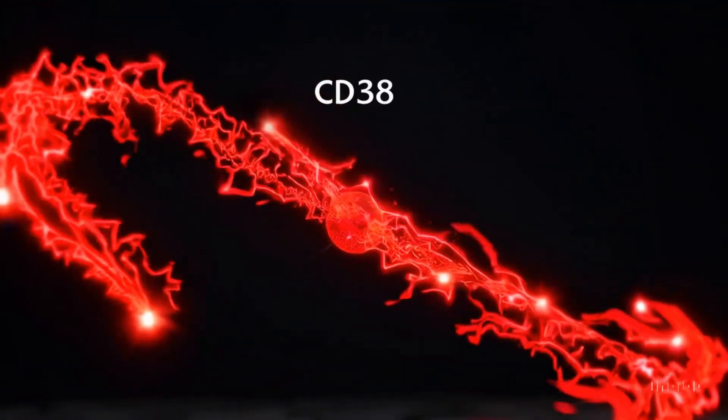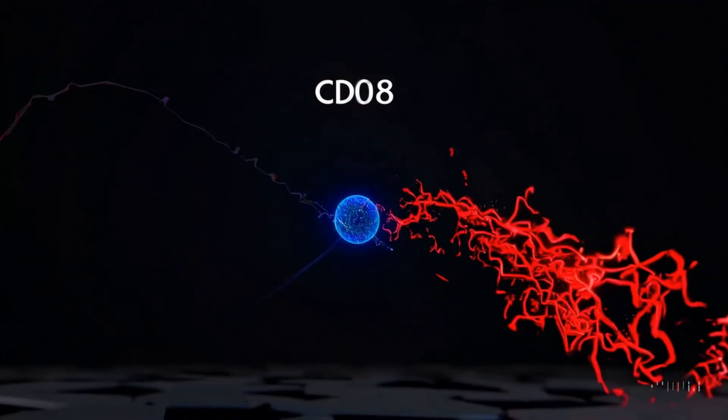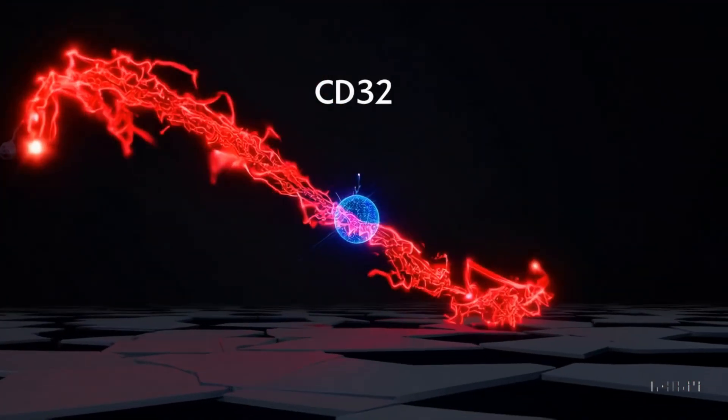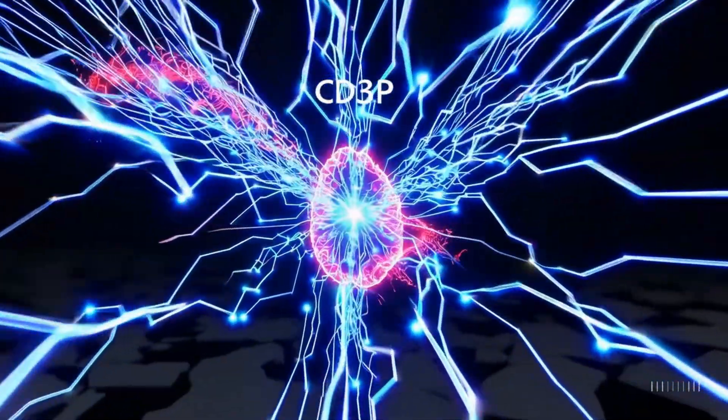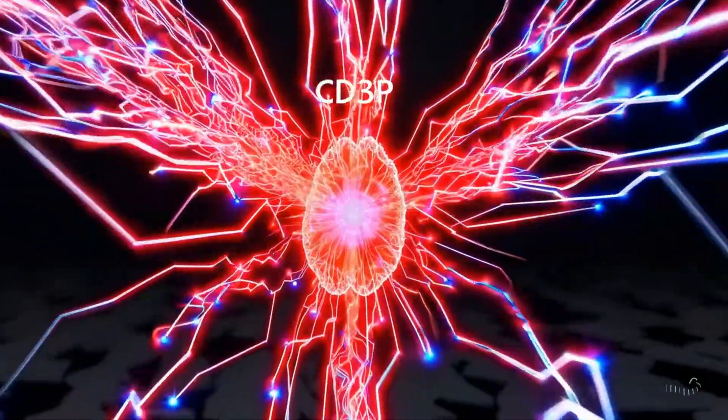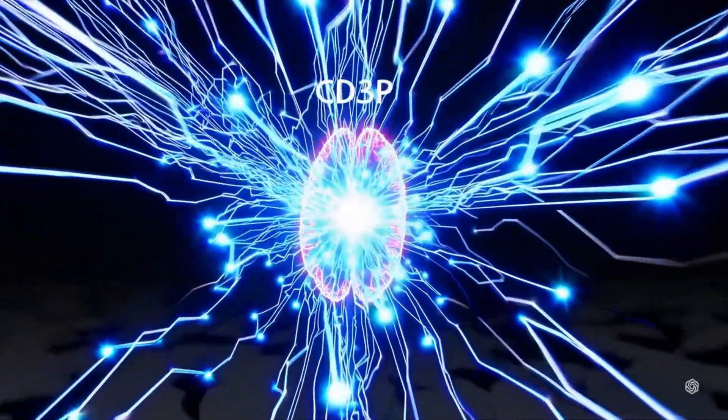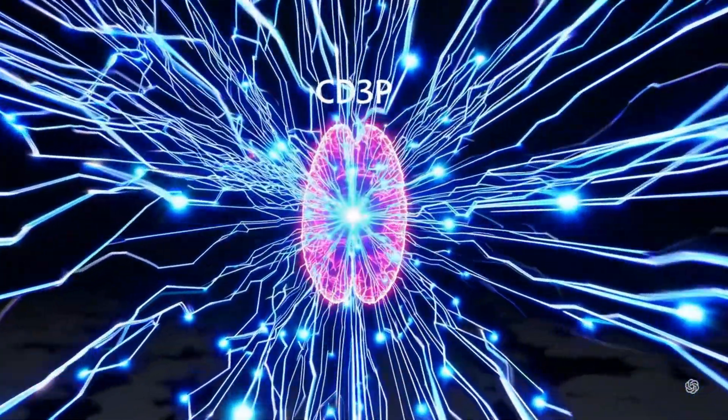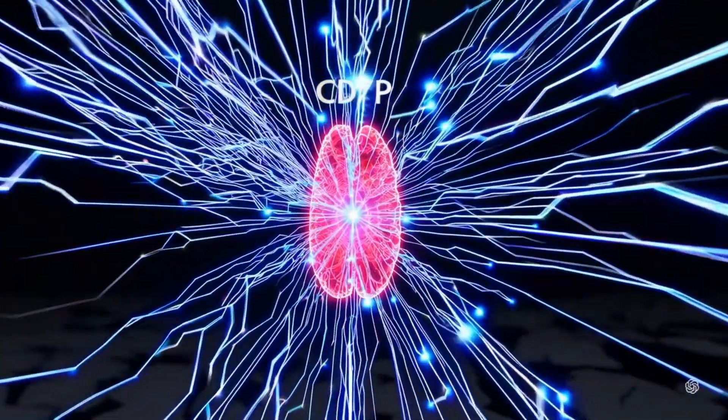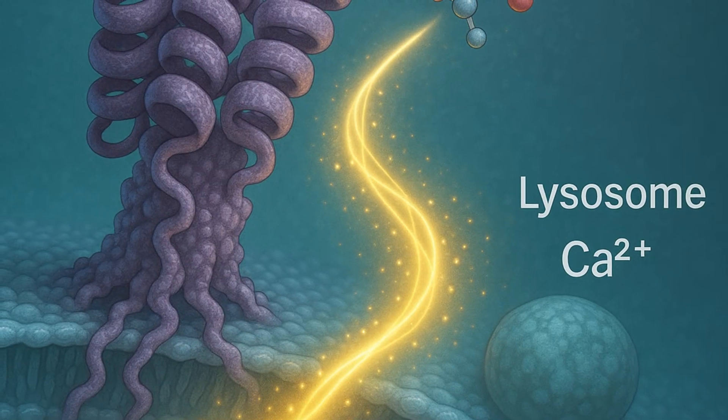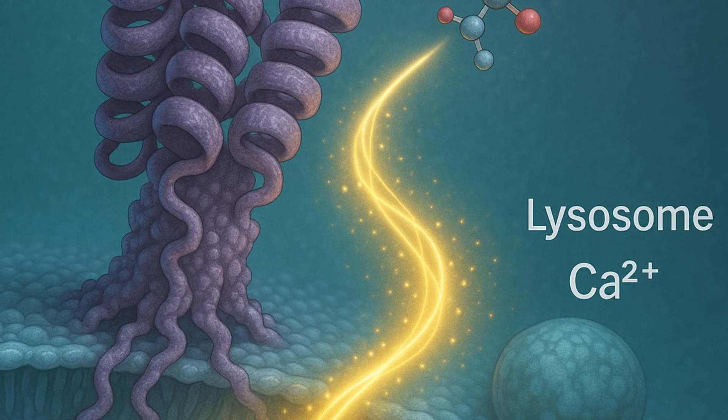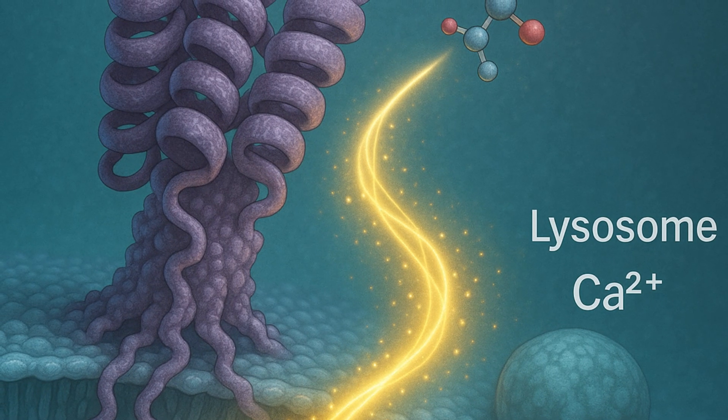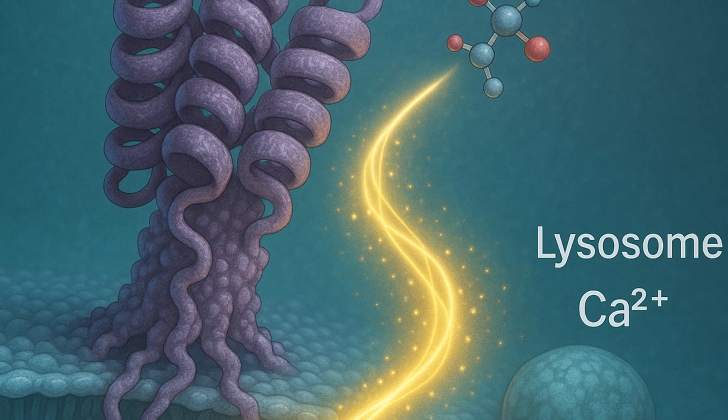Calcium flux from lysosomes to mitochondria is a tightly regulated process that supports mitochondrial membrane potential, oxidative phosphorylation, and ATP generation. By promoting lysosomal calcium release, niacin indirectly helps maintain mitochondrial efficiency, especially in metabolically active or stressed cells. This may be particularly important in tissues prone to energy deficits, such as cardiac muscle, neurons, and immune cells during activation.